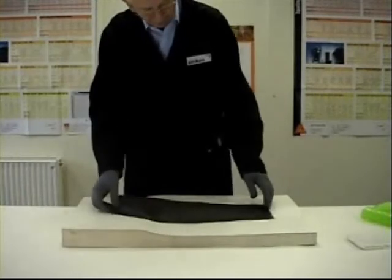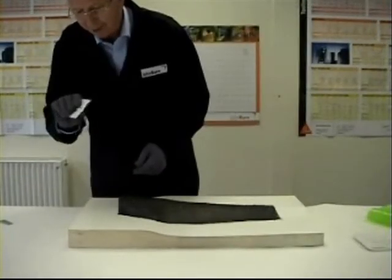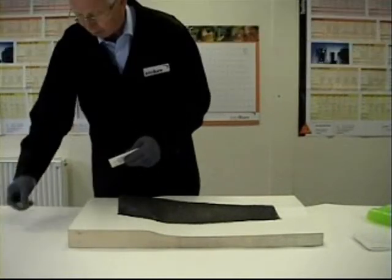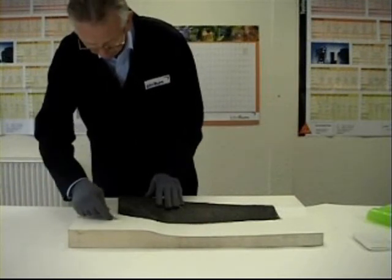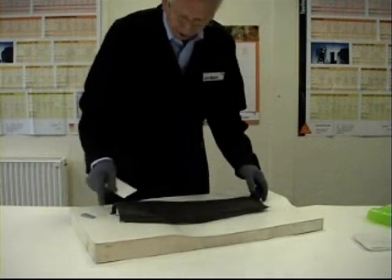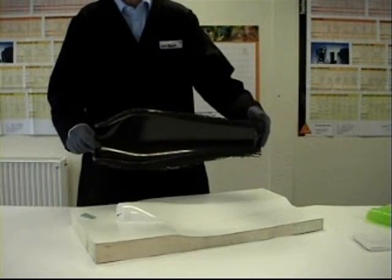Right, now we need to get this released off the mold. So we need a, it's better to use a plastic, this is a spreader for filler. You can use a little plastic wedge that you can cut if you want, but it's better not to use a metal tool. And there we are, we have our part.